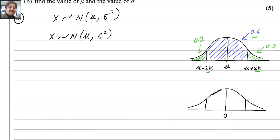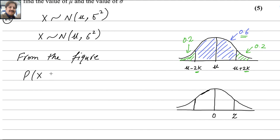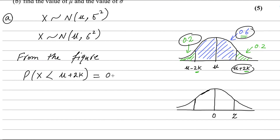We will convert this normal distribution into the standardized normal distribution. For the standard normal, the middle value is 0, with a positive Z value on the right and a negative Z value on the left. From the figure, the probability of X less than mu plus 2k equals 0.8, because the area to the left includes 0.6 and 0.2. This area of 0.8 also corresponds to the standardized distribution.